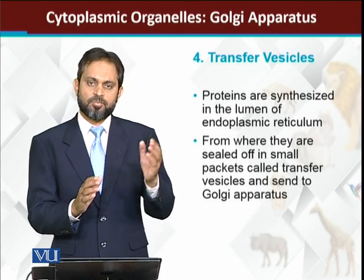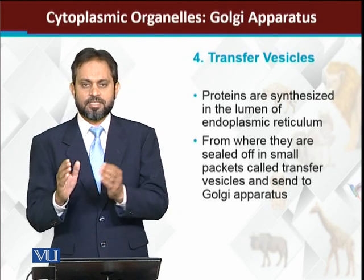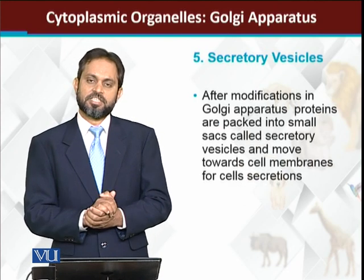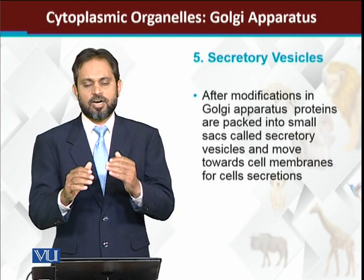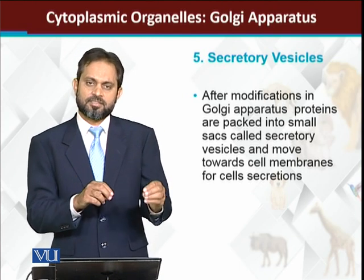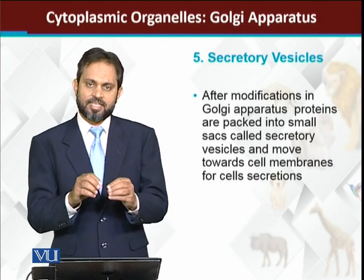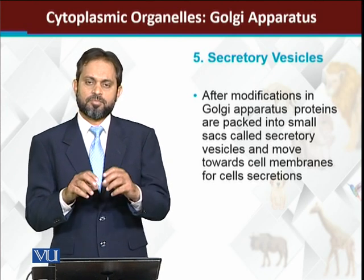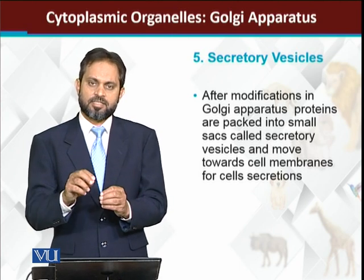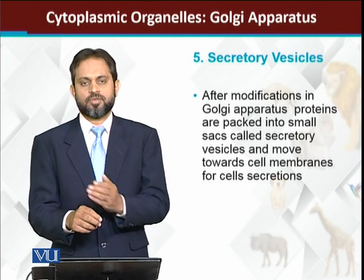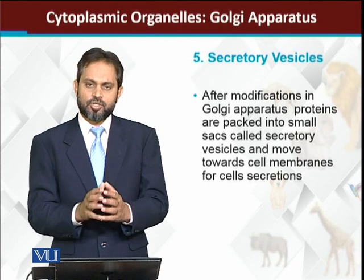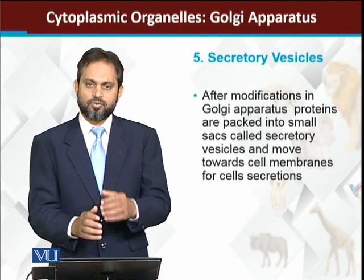Transfer vesicles carry different material from the endoplasmic reticulum to the Golgi apparatus. The second type, secretory vesicles, are on the other side of the Golgi apparatus. After proper modification and packing of proteins and materials that came from the ER, a vesicle is formed and sent towards the cell membrane or towards the lysosomes. The basic function of secretory vesicles is to carry materials from the Golgi apparatus towards the cytoplasm destinations.